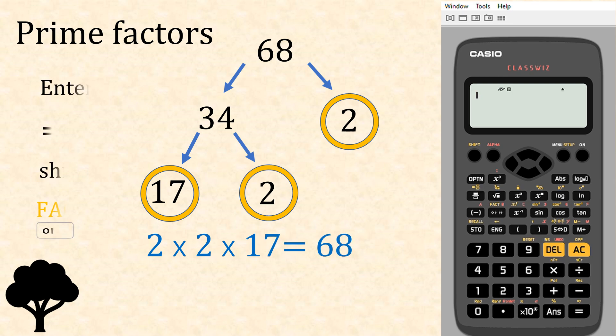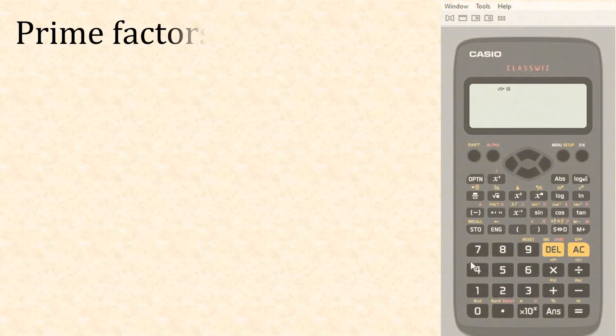We'd write that as 2 times 2 times 17, which would mathematically write down as 2 to the power of 2 times 17. Now if we had a calculator, we're going to enter 68, press equals, hit the shift key, and then the fact button. That is going to give us exactly the same answer: 2 to the power of 2 times 17.